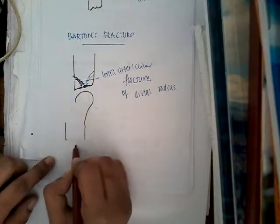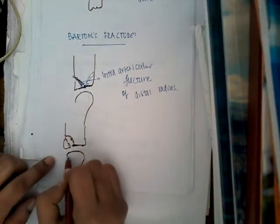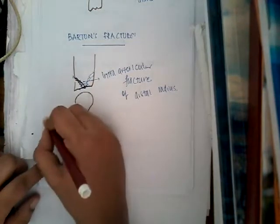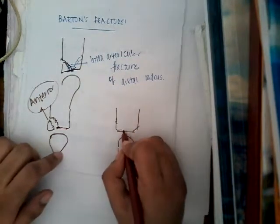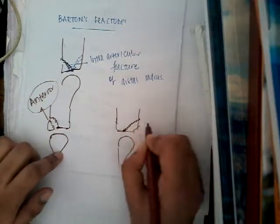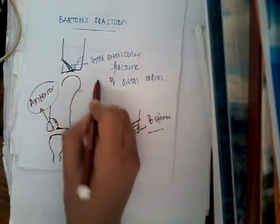Sometimes even small distal fragments can get displaced. The fractures are of two types: anterior and posterior. When the fracture starts at the articular surface and goes anteriorly to the anterior cortex, this is called the anterior type of fracture. If the fracture starts from the articular surface of the distal end of the radius and goes posteriorly, then it is called a posterior fracture. So Barton's fracture can be anterior or posterior.